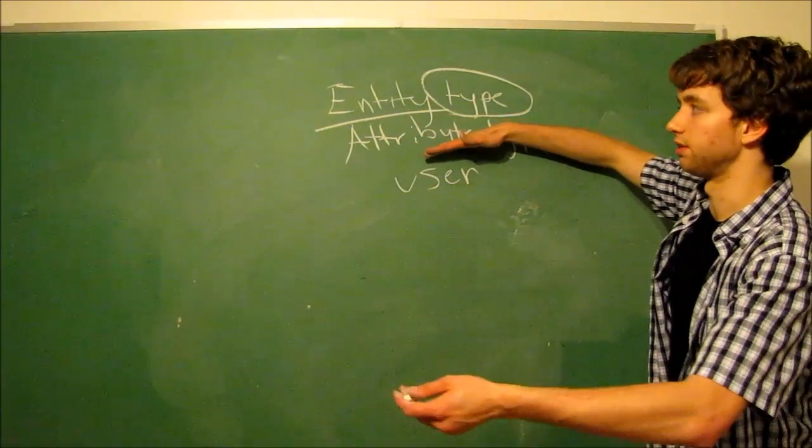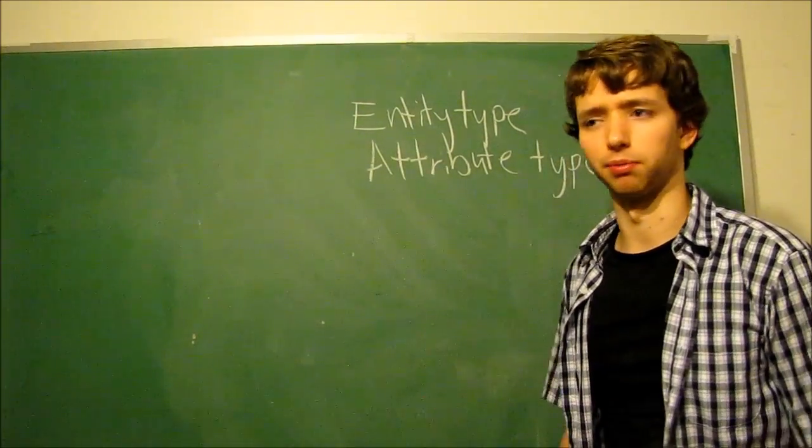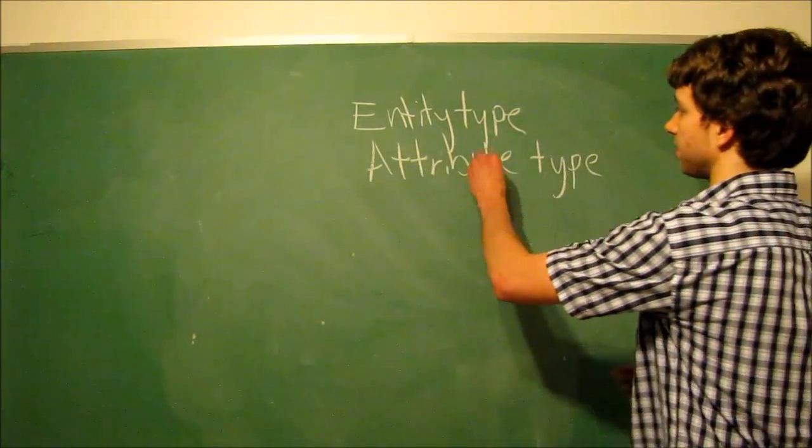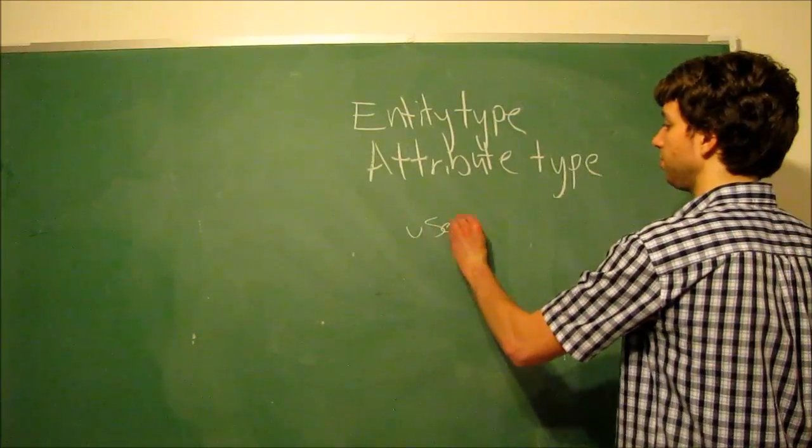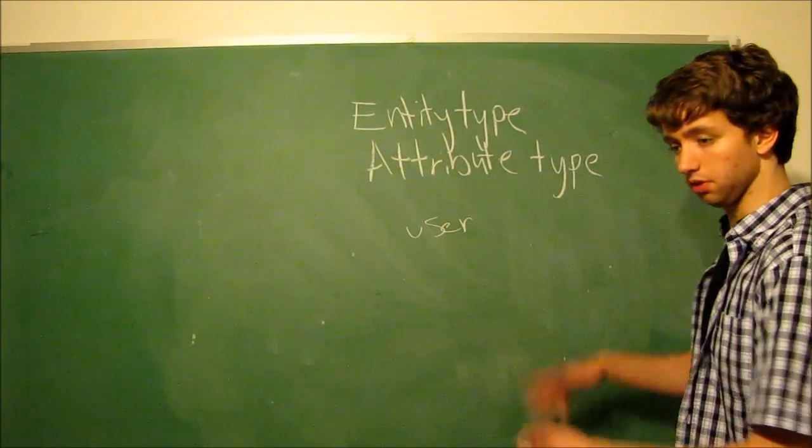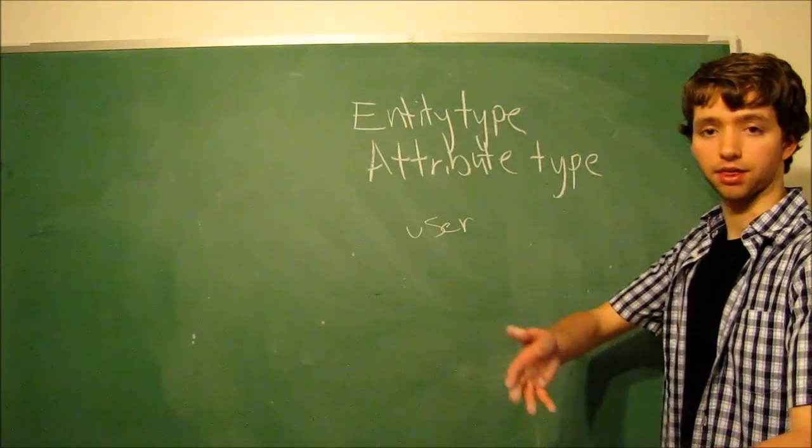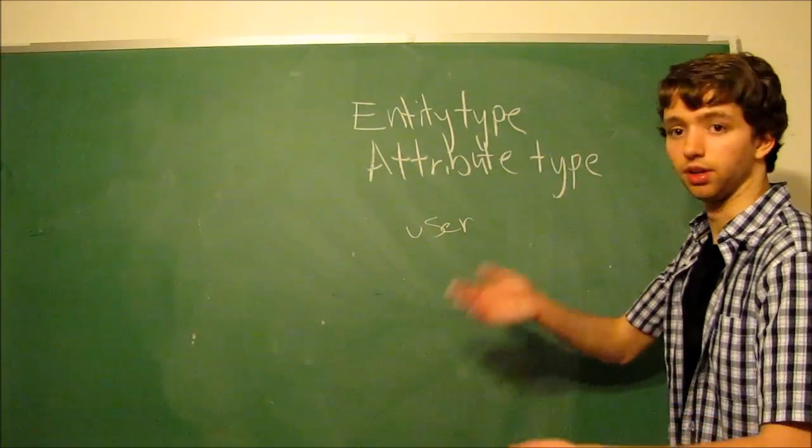So my camera stopped recording by itself for some reason, which is super annoying. But anyways, our entity type is the category of entities, such as user. Every single entity should be a user. Caleb was a user. Billy was a user. We could have Jimmy, John. We could have Catherine. We could have Caitlin. We could have Cassandra. You get the point.